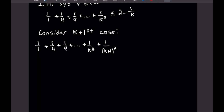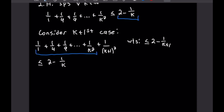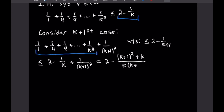We want to show that this is less than or equal to 2 minus 1 over k plus 1. We'll push our inequality to the right by applying our induction hypothesis, substituting 2 minus 1 over k for the sum through 1 over k squared. So we have that the full sum is less than or equal to 2 minus 1 over k plus 1 over k plus 1 squared.